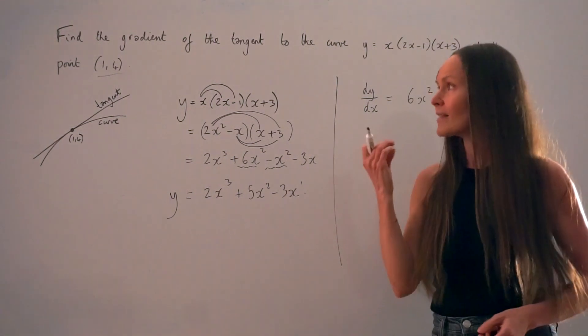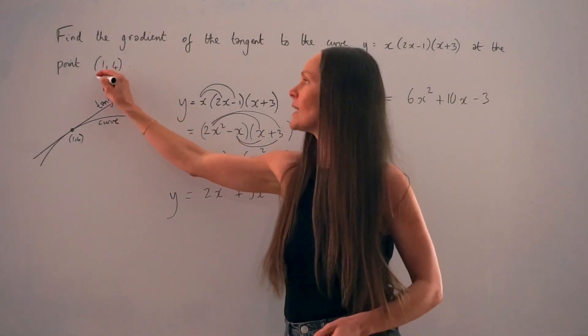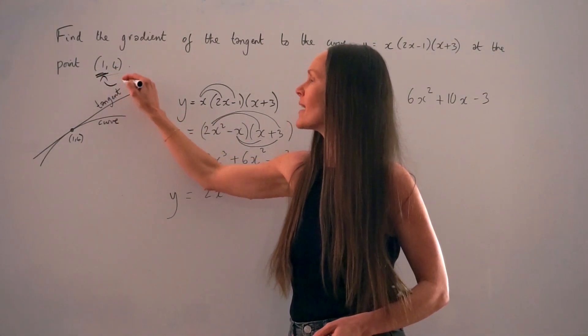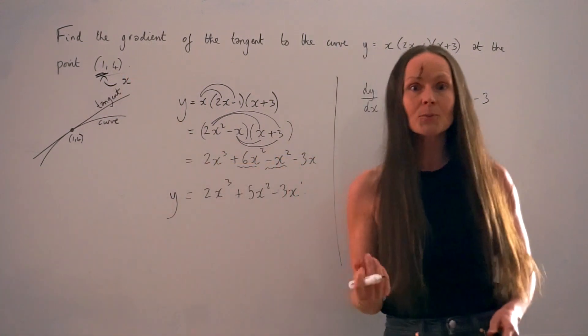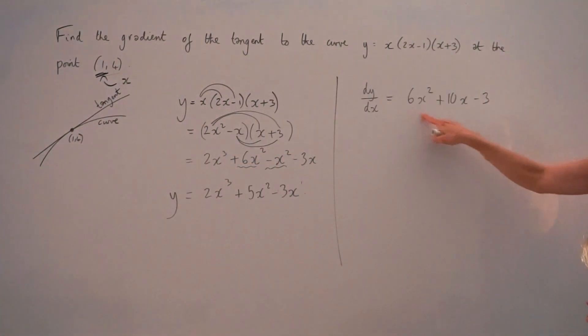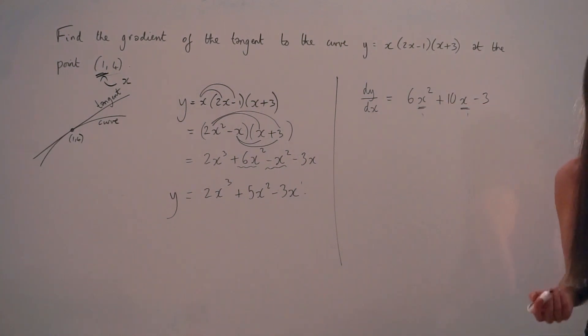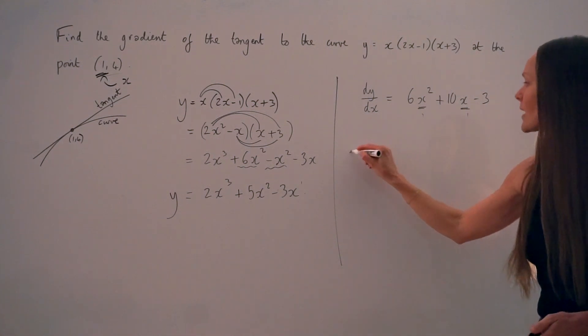So what you have to do to work out the exact gradient is take your value of x, so when x is positive 1, and substitute it into your derivative. So you're just replacing these two x values with positive 1. So I'm going to do that next.